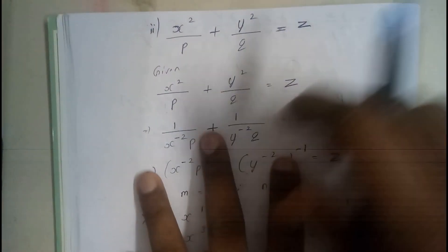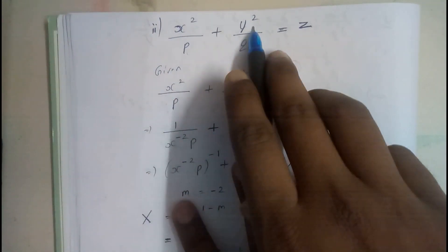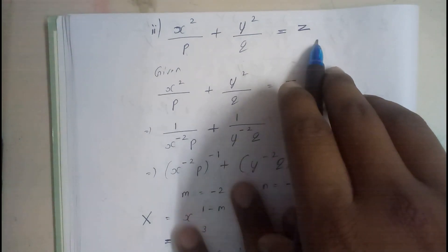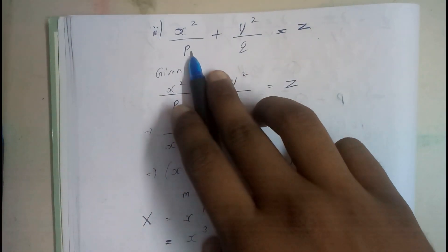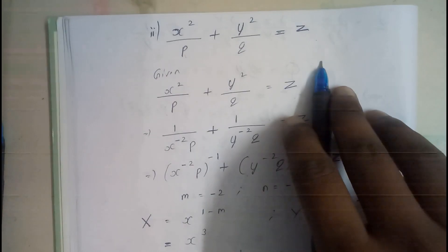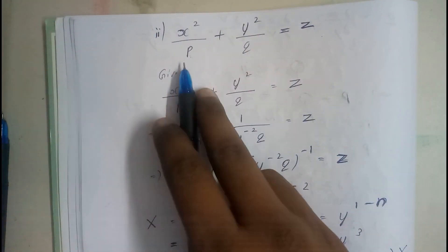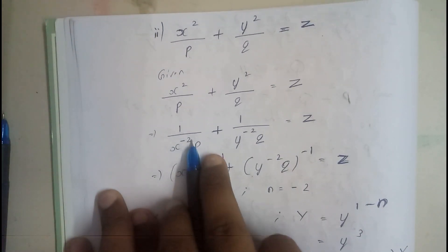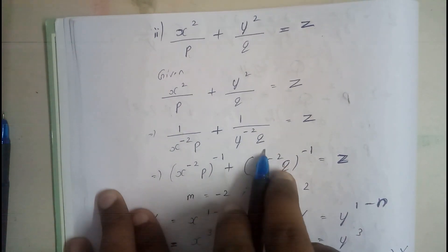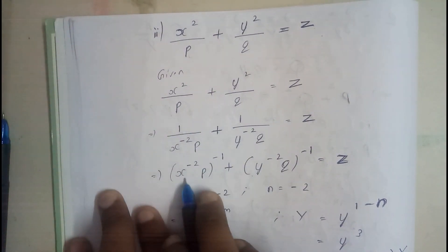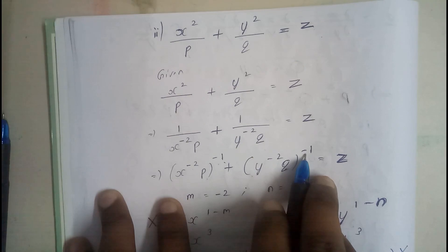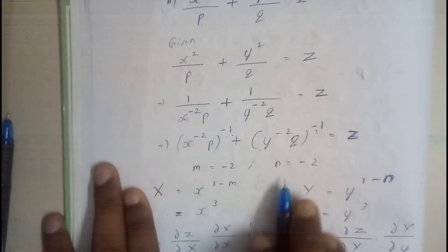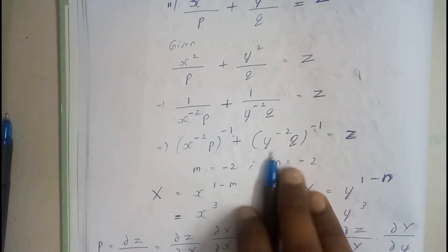The second problem is: x²/p + y²/q = z. Here p and q appear with x and y terms equal to z. We need to get p to the power of 1. Rewriting: x^(−2) · p + y^(−2) · q = z, so the values are m = −2 and n = −2.